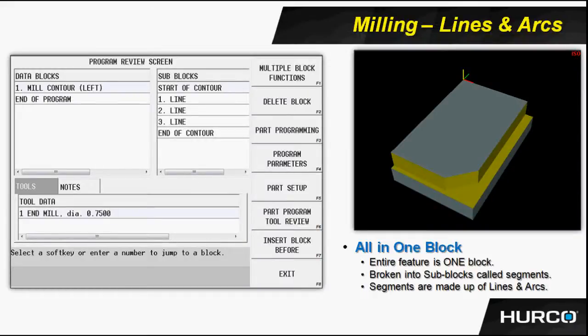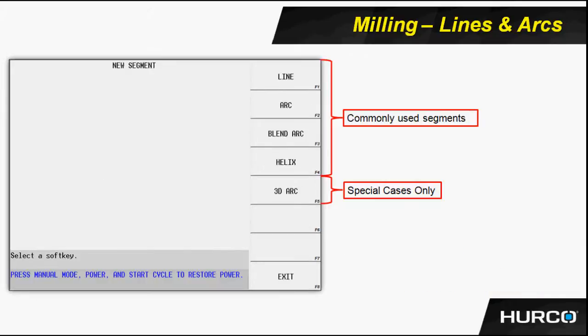Lines and arcs is a series of segments that lie within one particular block. Here in the example, you see we have a mill contour block — block number one — and that block is made up of several lines and arcs, which we call segments. Some of the segments available would be line, arc, and blend arc, which is simply an arc with a specific radius placed between two other segments, whether it be a line, an arc, two lines, and so forth.